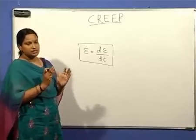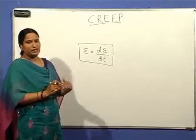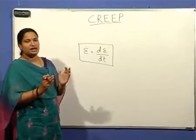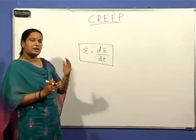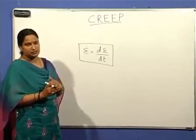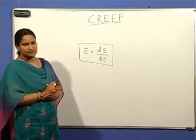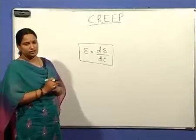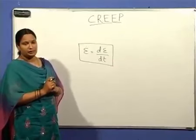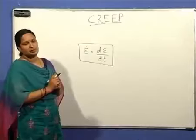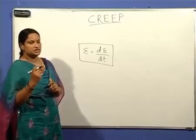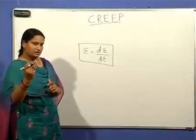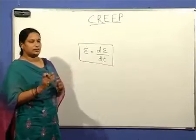In the secondary stage creep, the increase in dislocation density is balanced by the annihilation of dislocations, so the creep rate is constant at a minimum rate. In the tertiary stage, the creep rate increases until the material undergoes rupture.